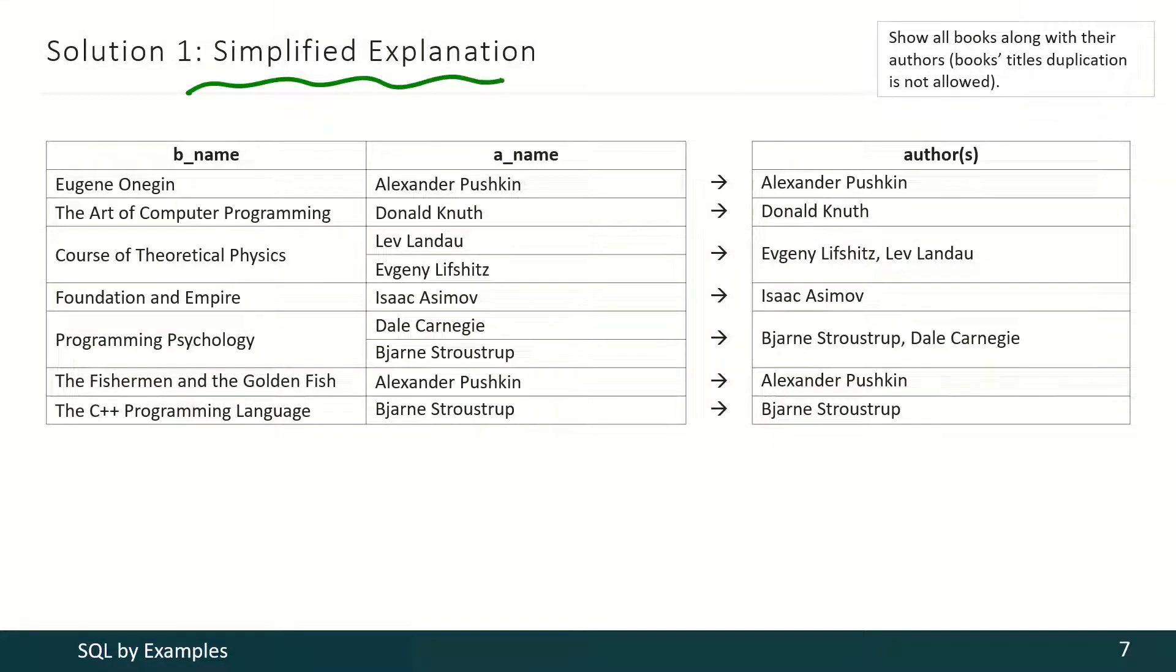And let's see a simplified explanation. If a book has only one author, that information is just copied to the final result. But if a book has several authors, that information is transformed into such a form.